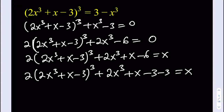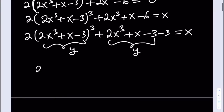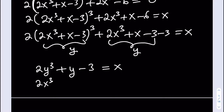Now we're going to use a very powerful method called substitution. This whole expression is going to be called y. So I'm getting 2y³ + y - 3 = x. And what I called y is 2x³ + x - 3, so that is equal to y.